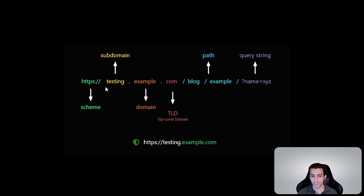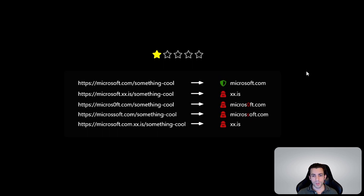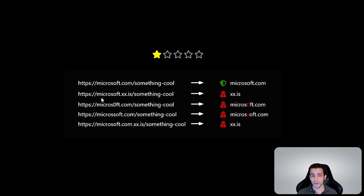In some cases we're going to see later, we actually care about the subdomain too. Let's start with the simple link manipulation techniques. Here's a good link: microsoft.com slash something. A typical method attackers use is purchasing a domain — in this case xx.is — and creating a subdomain they control called 'Microsoft'. So to the eye at a quick look, you might think you're visiting Microsoft, but it's actually taking you to xx.is, controlled by the owner of that domain.